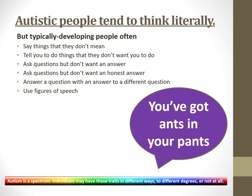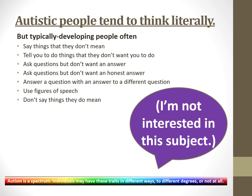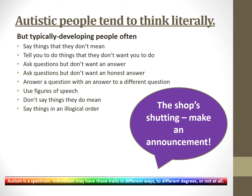They use figures of speech — they tell you that you have ants in your pants when there are no ants anywhere near your pants. They don't say things that they do mean, so you can be talking about your special interest and if they're not interested, they often won't tell you — they'll just stand there and then avoid you from then onwards.